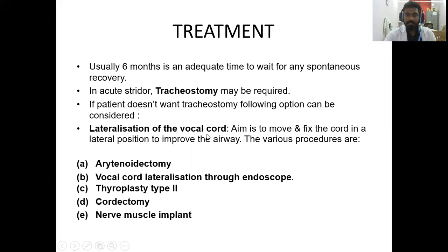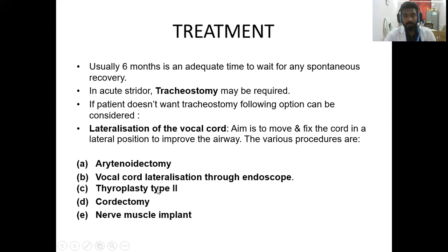The aim of lateralization is to move and fix the cord in a lateral position to improve the airway. The various procedures for lateralization of the vocal cord are arytenoidectomy, vocal cord lateralization through endoscope, thyroplasty type 2, cordectomy, and nerve-muscle implants.